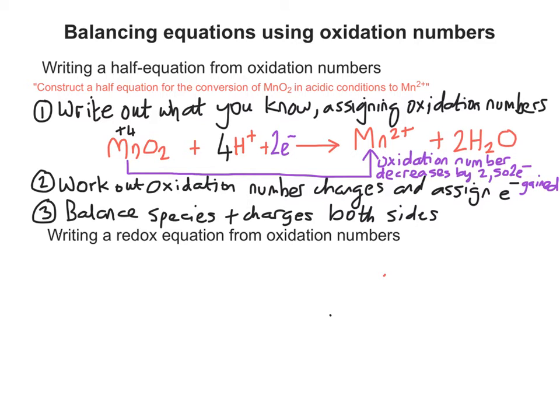To balance the charges, I'm just going to scrub out where I've written plus 4, because that's obviously not a charge or such. It's an oxidation number. So on the right-hand side, it's 2 plus overall. On the left-hand side, you've got 4 pluses and 2 minuses, which is also 2 plus overall. So this is now balanced.